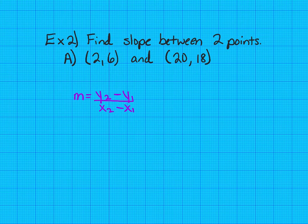What that says is that slope is equal to the change in your y's, also called rise, over the change in your x's, also called run. So you may wonder where x sub 1, y sub 1, x sub 2, y sub 2 comes from.